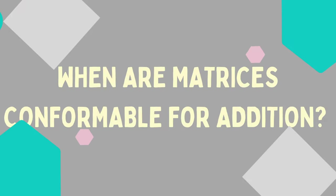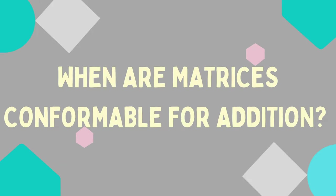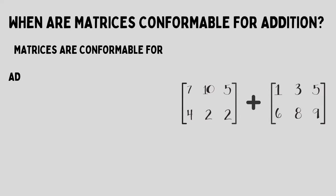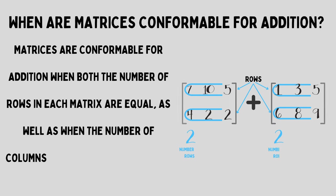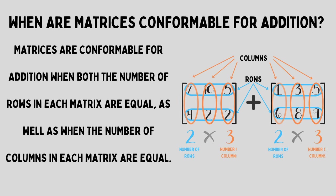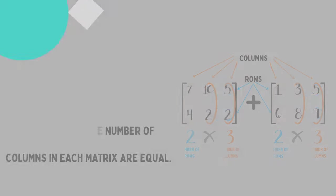So when are matrices conformable for addition? Matrices are conformable for addition when both the number of rows in each matrix are equal, as well as when the number of columns in each matrix are equal. If you look at our example here, you would see that both matrices have two rows and both matrices have three columns — they have the same order.